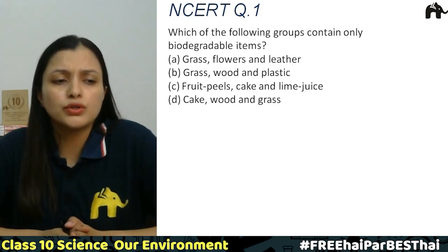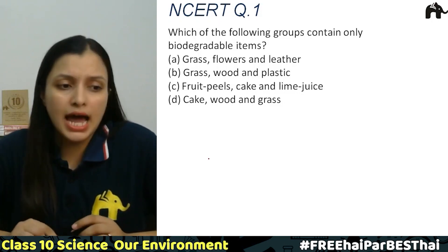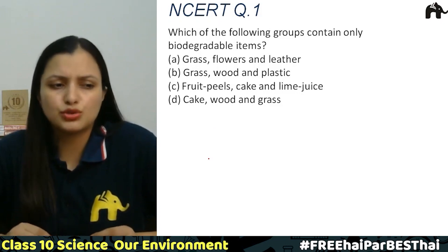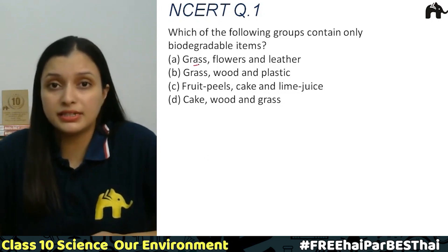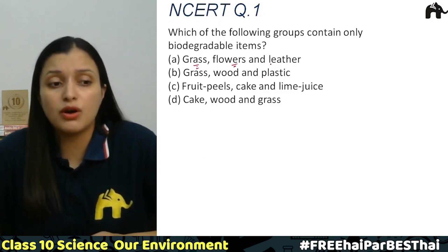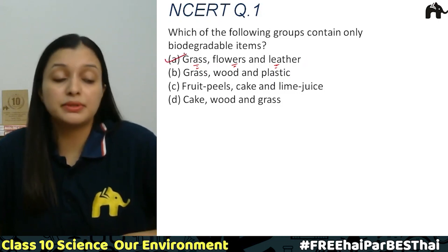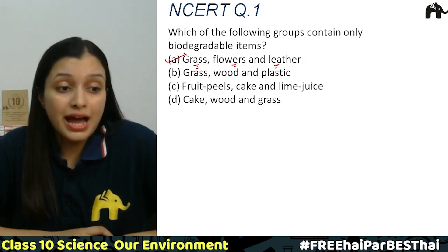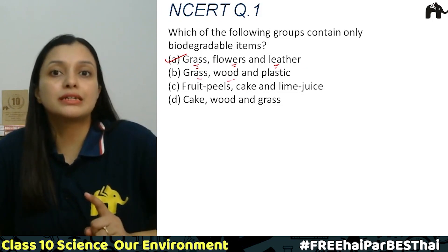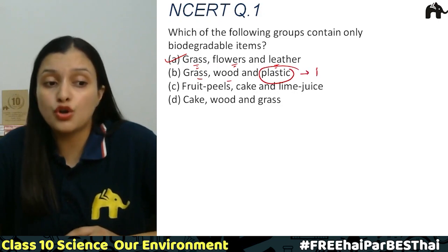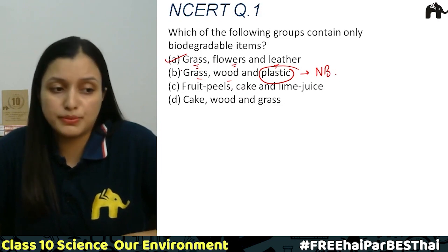Non-biodegradable substances हमारे environment को toxic भी करते हैं और microorganisms से decompose नहीं होते। तो इनमें से कौन से groups में biodegradable items हैं? पहला option है glass, flower, leather — grass भी biodegradable है, flowers भी, और leather भी animal skin है, so these are biodegradable. फिर grass, wood, and plastic — grass और wood तो biodegradable हैं लेकिन plastic is non-biodegradable, so this option is incorrect.